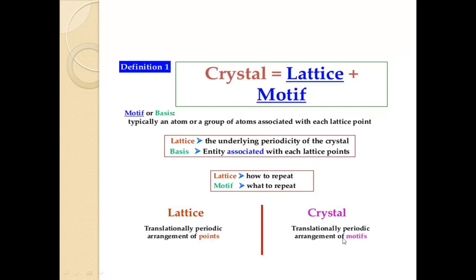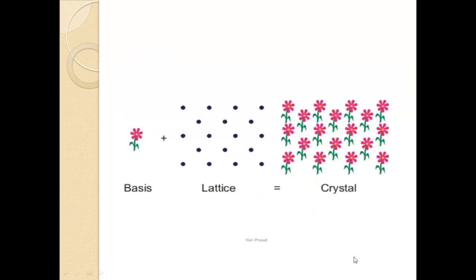A crystal is traditionally defined as a translationally periodic arrangement of motives. That is nothing but a repetitive arrangement of atoms in a lattice or crystal structure. For example, to produce a crystal structure, we combine a basis with a lattice at different positions — when combined, it forms a crystal.